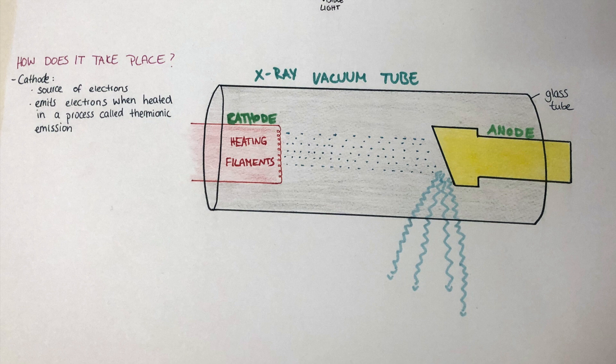So how does it take place? We have a cathode, which you can see here, which is the filament within the x-ray tube that acts as our source of electrons. The cathode is a metal surface connected to an electrical current so it can be heated up. This is necessary because electrons are normally stably staying within the metal of the cathode, since electrons are attracted to the positive nuclei of the metal atoms. When we heat the cathode up to a very hot temperature, it can release electrons — a process we refer to as thermionic emission.